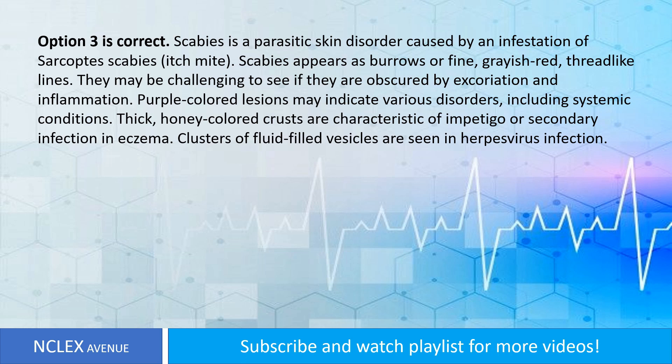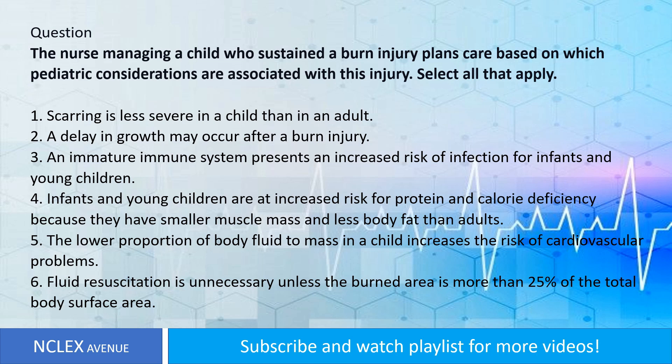Scabies is a parasitic skin disorder caused by an infestation of Sarcoptes scabiei itch mite. Scabies appears as burrows, which are fine grayish-red thread-like lines. They may be challenging to see if obscured by excoriation and inflammation. Purple colored lesions may indicate various disorders including systemic conditions. Thick honey-colored crusts are characteristic of impetigo or secondary infection in eczema. Clusters of fluid-filled vesicles are seen in herpes virus infection.